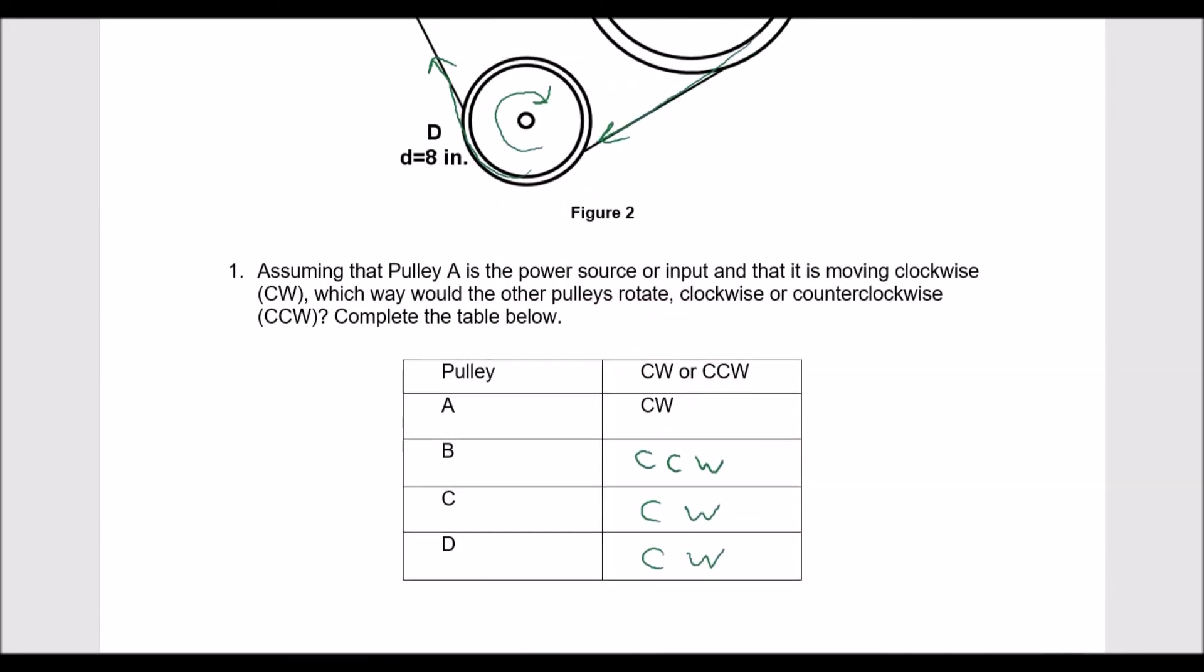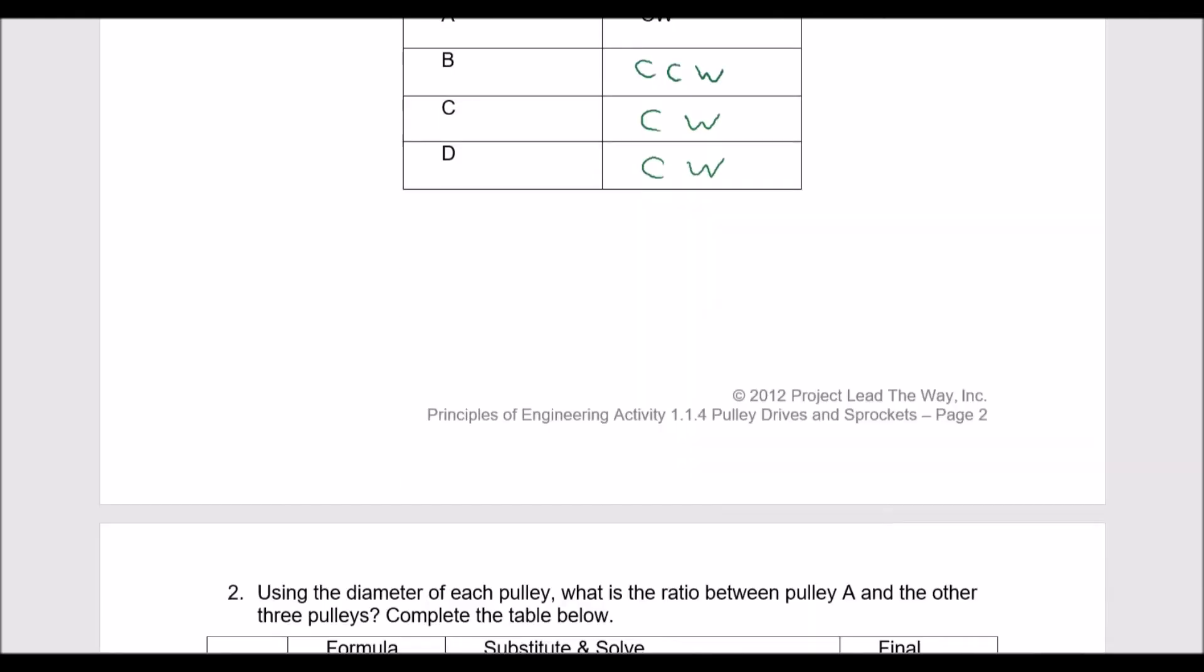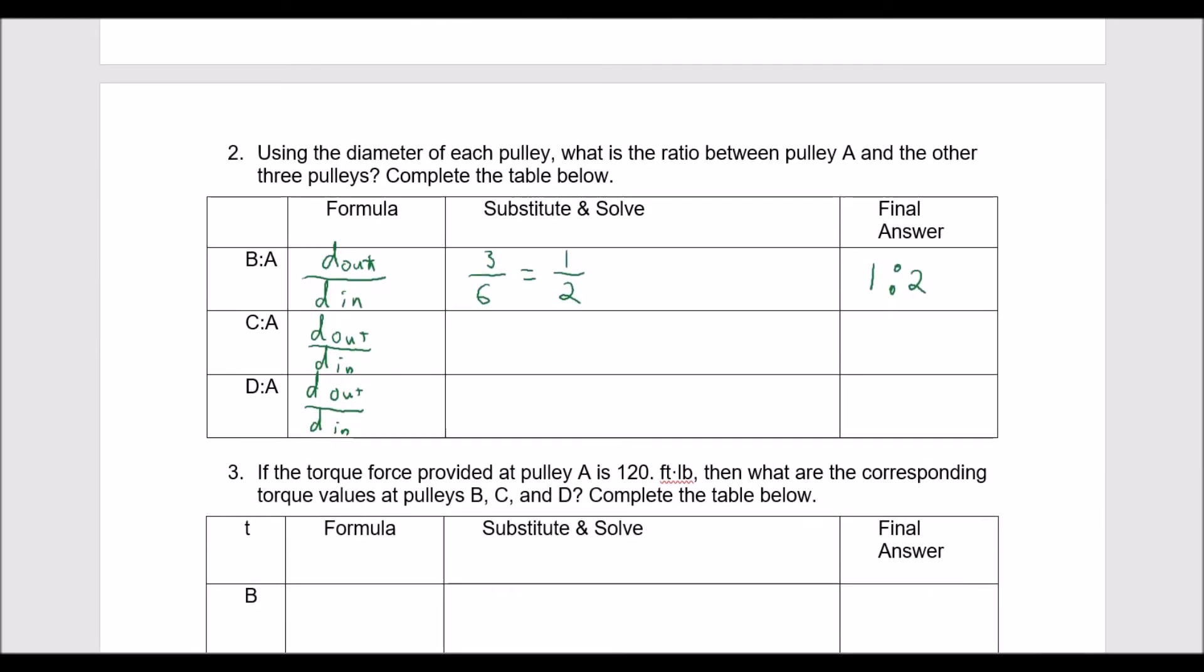For C to A, we have a diameter of 10 and diameter of 6. So we take our 10 divided by 6, giving us 5 over 3, and so our final ratio is 5 to 3.